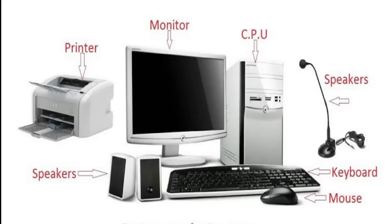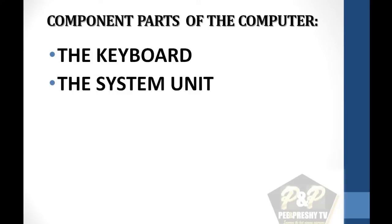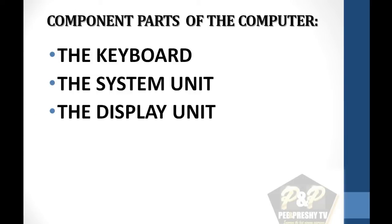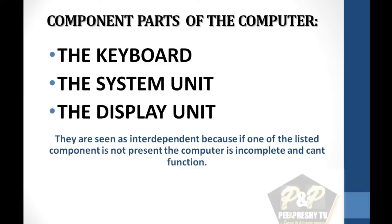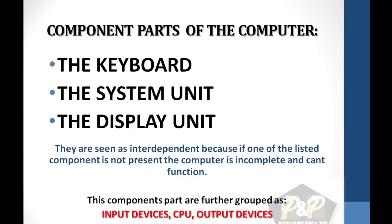Component parts of the computer. The computer consists of three interdependent component parts which include: 1. The keyboard, 2. The system unit, 3. The display unit. They are seen as interdependent because if one of the listed components is not present, the computer is incomplete and cannot function. We will be discussing all these component parts one after the other, starting from the keyboard.